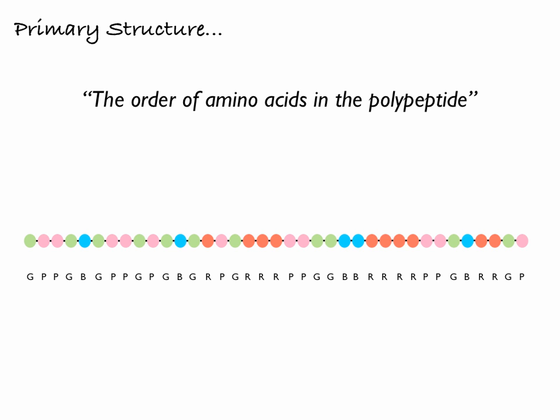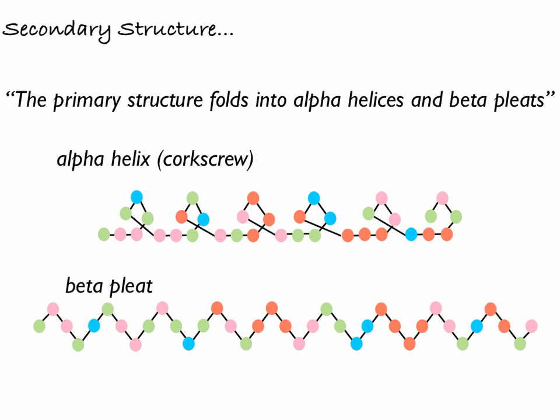The only bond present at the primary structure level is the peptide bond. Moving on to secondary structure, this is the way that the primary structure folds on itself. We have two different formations: the alpha helix, which has a corkscrew shape, and the beta pleat, which is like a zigzag. At this level, the only additional bond present is the hydrogen bond — a weak electrostatic attraction that holds the secondary structure in place.